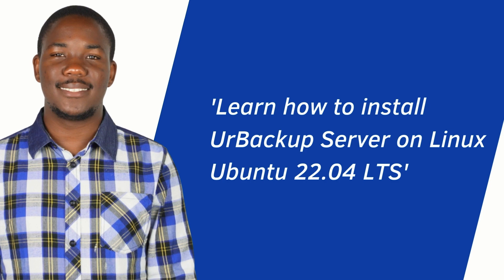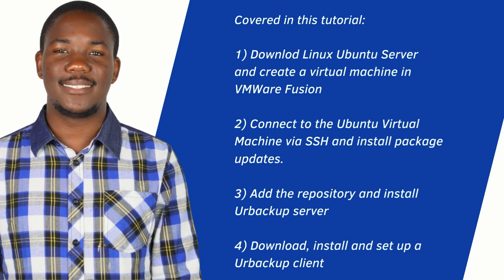I'm going to show you step by step how to set up URBackup server on Ubuntu 22. First, I'll show you how to download Linux Ubuntu from the official Ubuntu website and create a virtual machine in VMware Fusion using the Ubuntu 22 image. Second, I'll show you how to connect to the Ubuntu virtual machine via SSH and install system and package updates. Third, how to add the repository and install the URBackup server software. And finally, how to download and set up the URBackup client to create and maintain document level and image level backups.